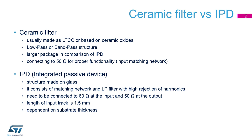A necessary matching network also increases the needed space. The ceramic filter needs to be connected to 50 Ohm for proper functionality. If not correctly matched, it decreases the stop band rejection. The IPD integrated passive device is a structure made on glass. It consists of a matching network for the chip STN32WB and a low pass filter with high rejection of harmonics and spurious. It needs to be connected to 60 Ohm at the input and 50 Ohm at the output. The input RF track must fulfill a certain length because it is part of the matching network, and this is slightly dependent on the thickness of the substrate.